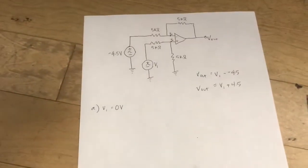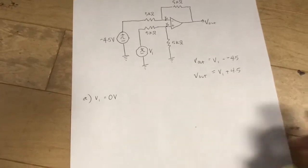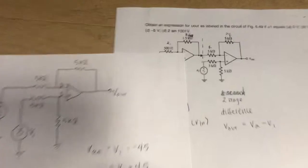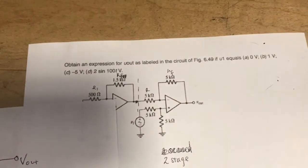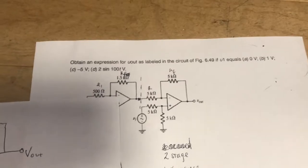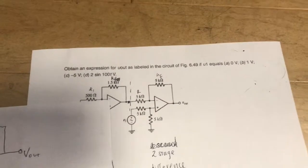In the original problem, it gives us four problems. It gives us A: 0 volts, B: 1 volt, C: negative 5 volts, and D: 2 sine 100 T volts.